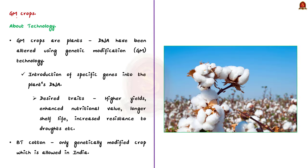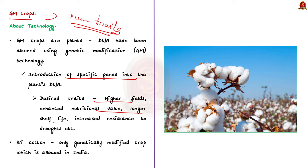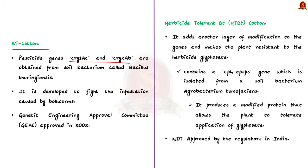Our next topic is genetically modified crops — the most frequently asked area in the prelims. Genetically modified crops are plants whose DNA has been altered using genetic modification technology. GM technology involves introduction of specific genes from often different species into the plant's DNA to confer desirable characteristics. The main purpose of GM is to produce plants with desired traits like higher yields, enhanced nutritional value, and longer shelf life. For Bt cotton, pesticide-resistant genes like Cry1Ac and Cry2Ab are obtained from the soil bacterium Bacillus thuringiensis and inserted into the cotton DNA to make the plant resistant to pests, creating genetically modified cotton — Bt cotton.